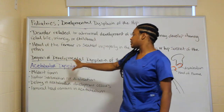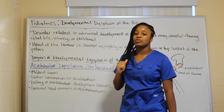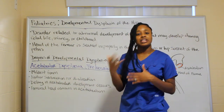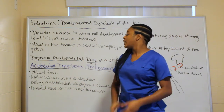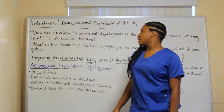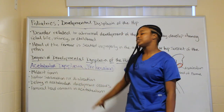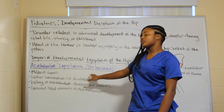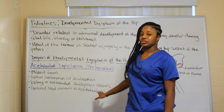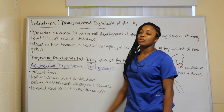You have degrees of developmental dysplasia of the hip based on severity. The first one is acetabular dysplasia, which is your preluxation — this is your mildest form.